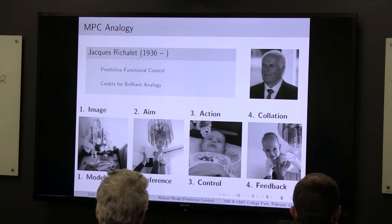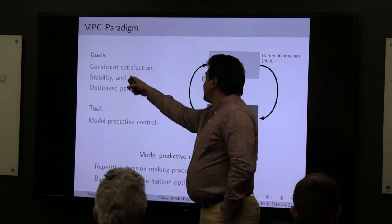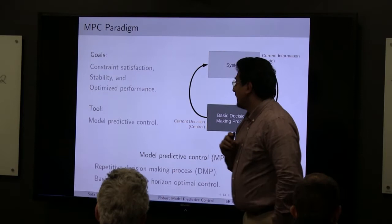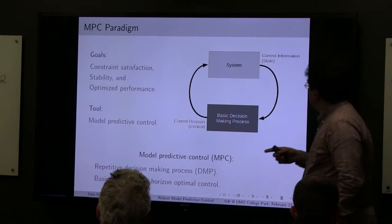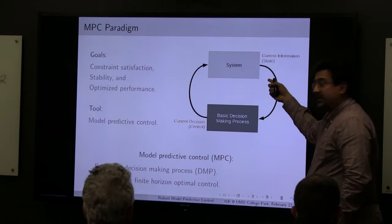Typically, you make a set prediction, you want to achieve a set aim, you take a set action, and as possible you gather information, collate the situation, and decide what you want to do. When it makes sense to use MPC: essentially when you're interested in satisfaction of constraints, in some kind of stability, and when you'd like to optimize performance. You have two blocks which interact — one is a system, the other is a basic decision-making process. You collect information from the system — the state in a state-field setting — and you feed the control back to the system.